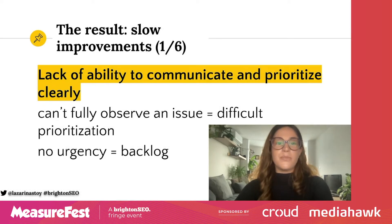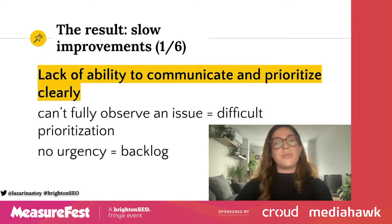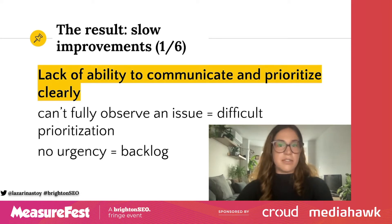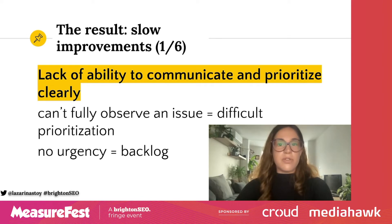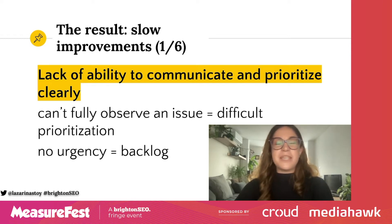What this results in is a number of different issues that stall the potential improvements that can be done on a site. First of all, there is a lack of ability for you, the auditor, to communicate and prioritize clearly. If you cannot identify all the pages for an observed issue, prioritization will struggle. Failing to communicate urgency to your developers will eventually stall implementations — because if there is no urgency, a task immediately gets put in the backlog and probably stays there forever.